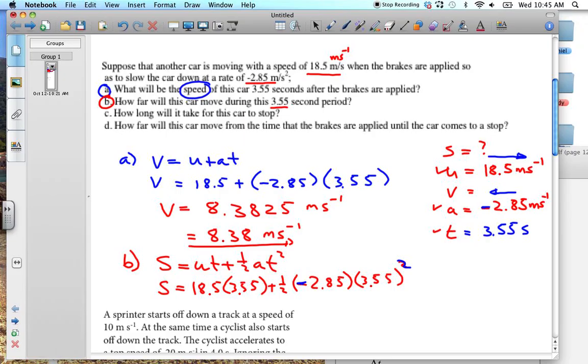18.5 times 3.55, plus 0.5 times minus 2.85 times 3.55 squared. And we get a total here of 47. Now I'm going to do this to three significant figures, 47.7 meters. It actually read 47.716, so I'll go to the fourth significant figure, see if my third significant figure will go down by any.